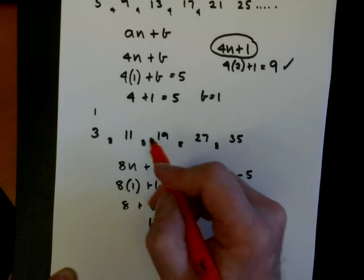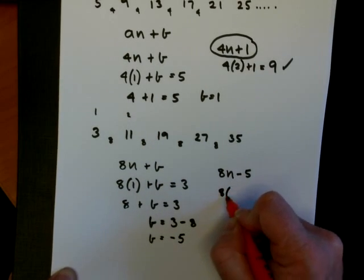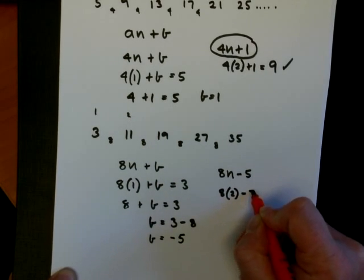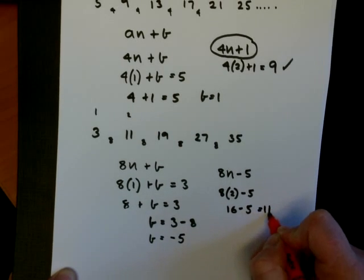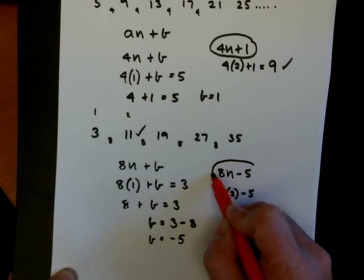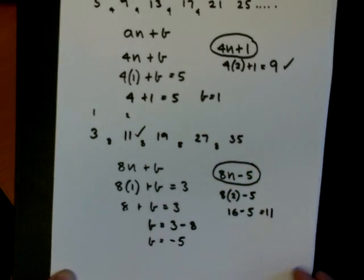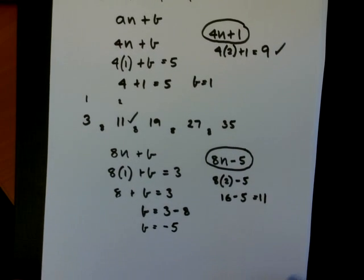Once again, let's check on the second term. So 8 times 2 minus 5 is 16 minus 5, which equals 11. So correct. So 8n minus 1, 8n minus 5 I should say, is the nth term of this linear sequence.